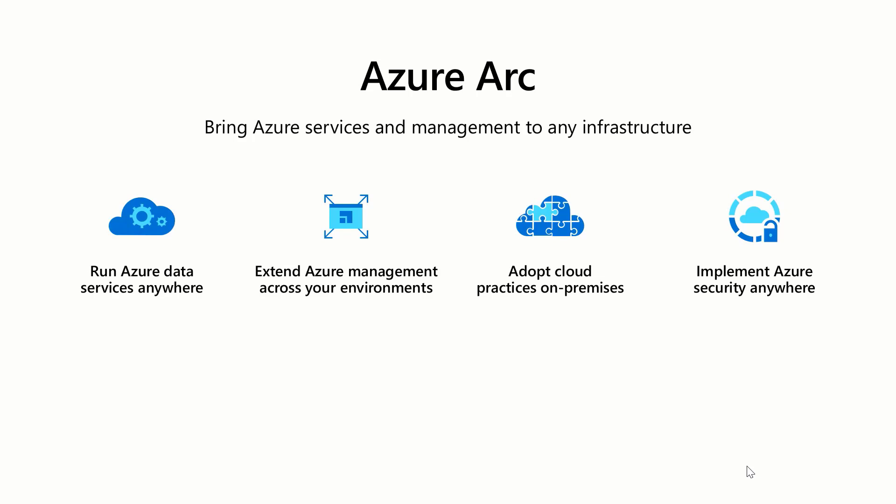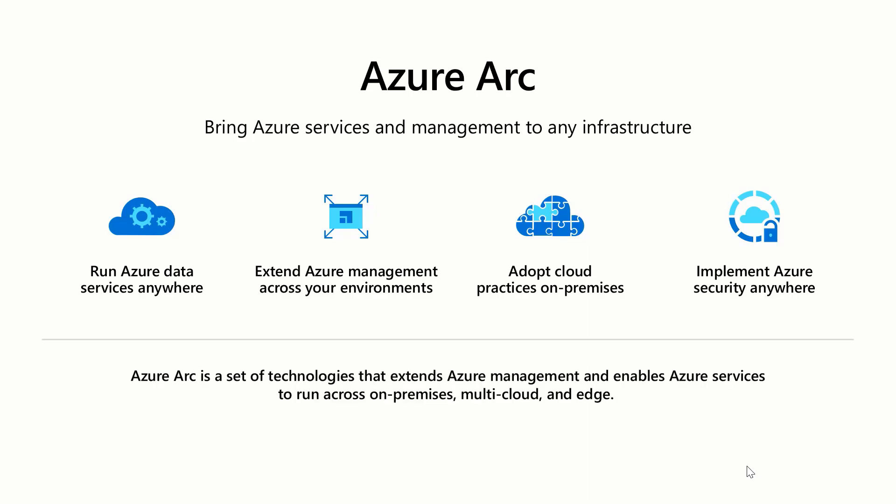Azure Arc allows us, for example, to run Azure data services wherever we need them — we can install them on-prem or on another cloud provider — but also extends Azure management across all these environments. Previously, Azure management was limited basically to Azure and Azure Stack, but now we can use the same cloud native management capabilities and bring them to on-prem servers and other locations as well. Azure Arc really is a set of technology that extends Azure management and enables Azure services to run across on-premises, multi-cloud, and the edge.